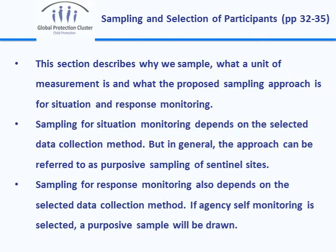The sampling and selection of participants section, pages thirty-two to thirty-five in draft five, provides description of why we sample, explains what a unit of measurement is, and gives a sense of the general proposed sampling approaches for situation and response monitoring. For situation monitoring, depending on the data collection method, we generally use purposive sampling of sentinel sites. For response monitoring, it also depends on the data collection method selected — if agency self-monitoring is selected, purposive sampling will again be used. More details will come in the following sessions.